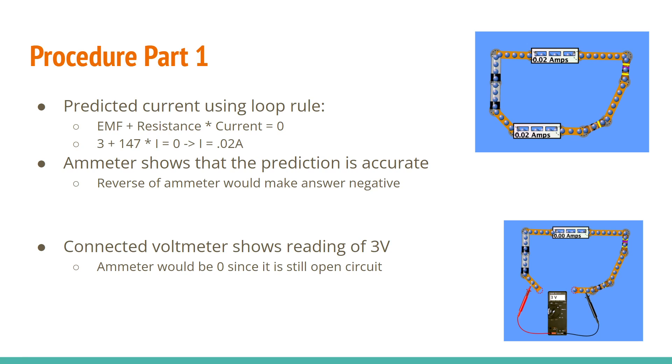And the ammeter shows that our prediction is correct. And if you reverse the ammeter, it'd make the answer negative. If you open the circuit and then connect the voltmeter, it'll show that there's a reading of three volts, but the ammeter would be zero since it'd be considered an open circuit at that point.